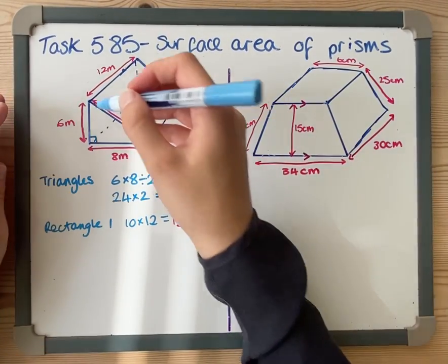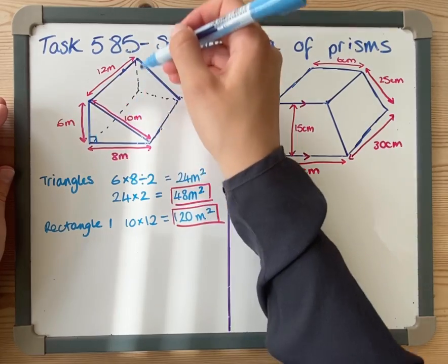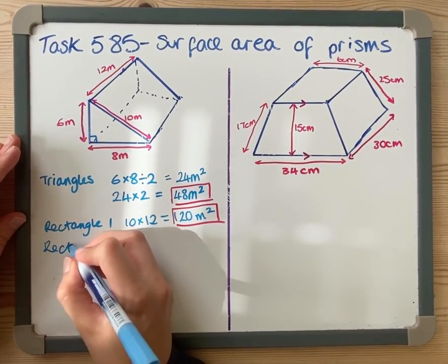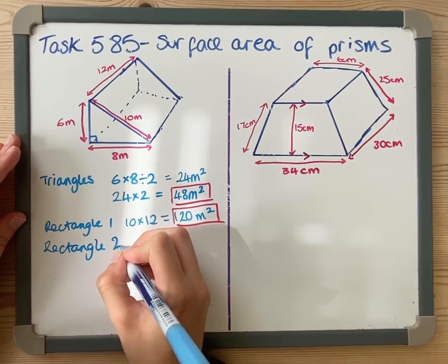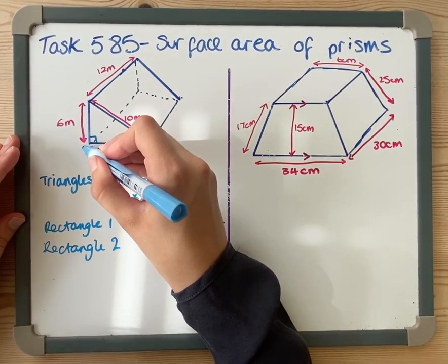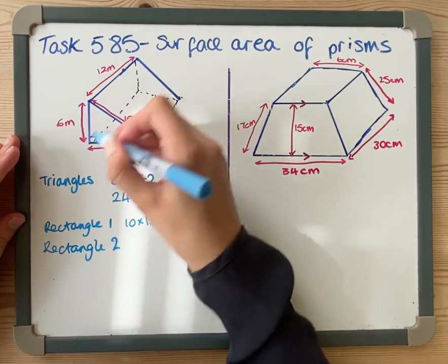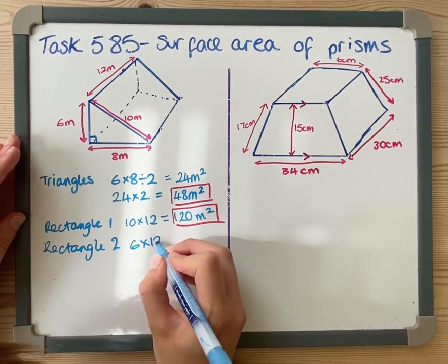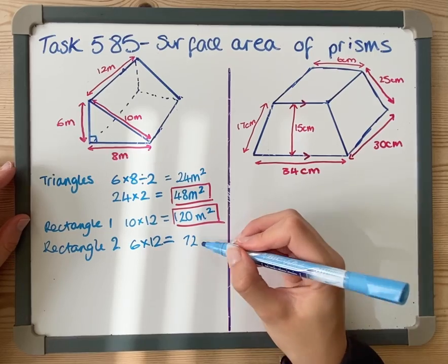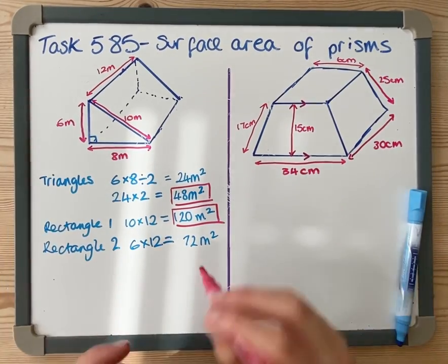My next one, rectangle two is this back bit. Rectangle two is going to be this length times by that which is 6 by 12 because that length is the same as that. So 6 by 12, 6 times 12 is 72 meters squared.